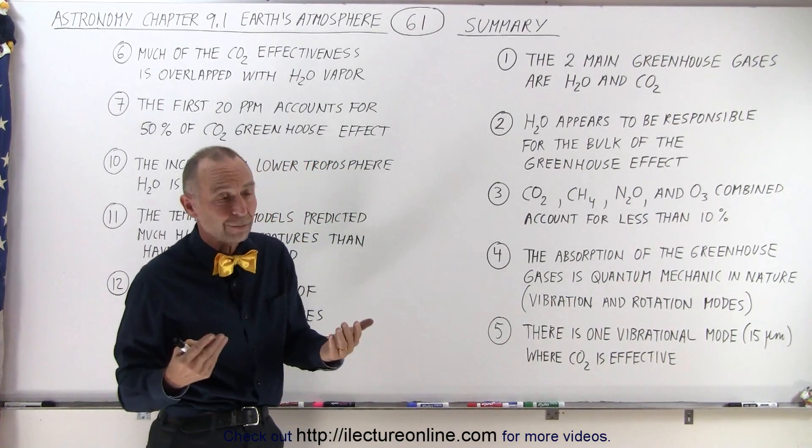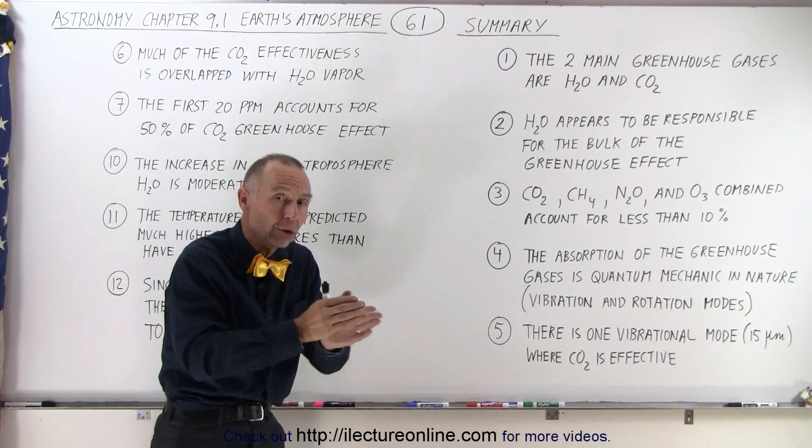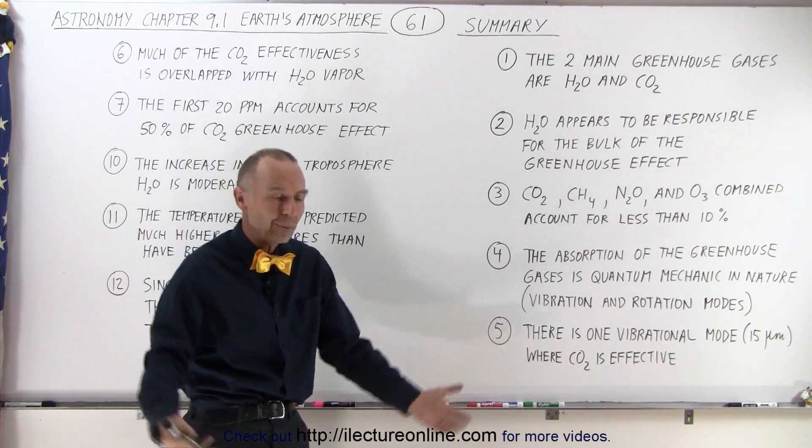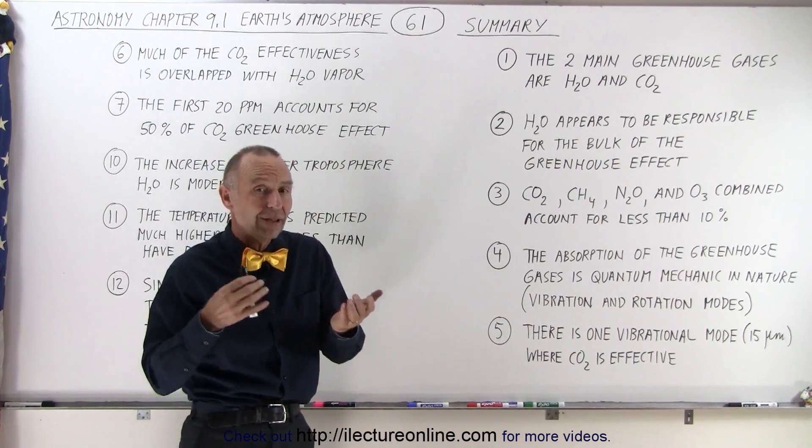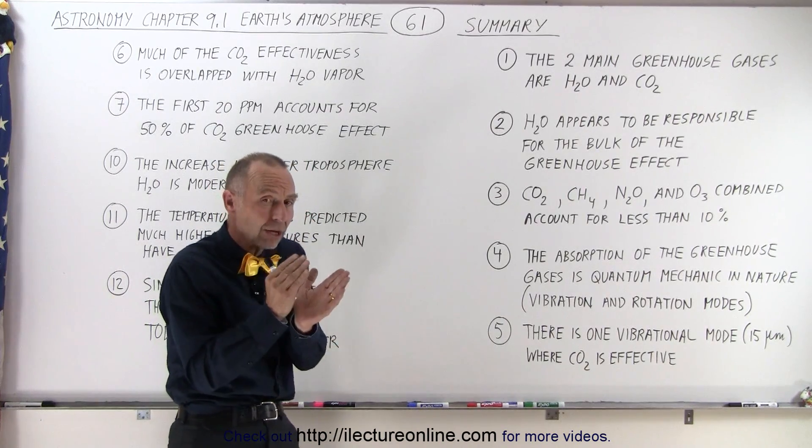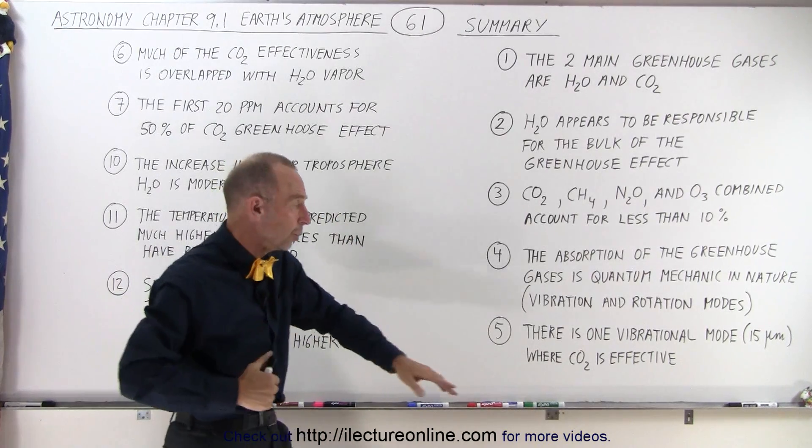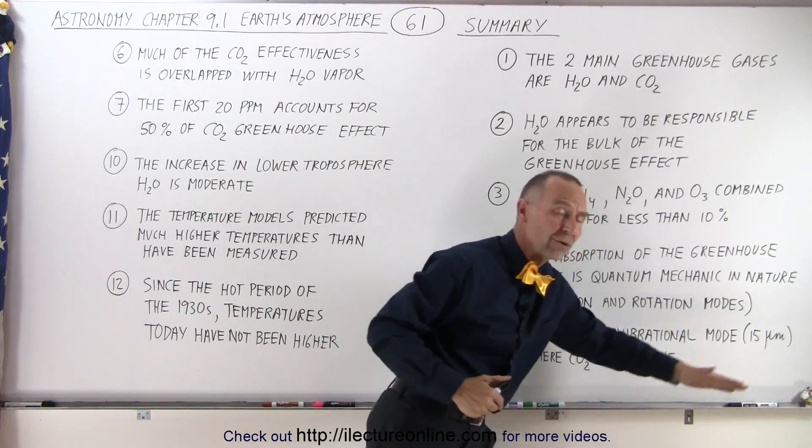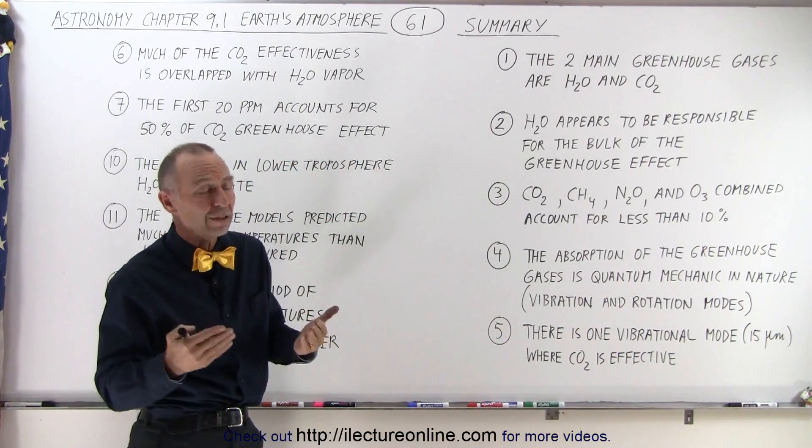Water vapor is extremely effective because they have so many rotational and vibrational modes that they can absorb a large percentage of the radiation coming back from the Earth. Carbon dioxide isn't as effective because carbon dioxide only has one main vibrational mode, the bending mode, which centers around the 15 micrometer wavelength radiation, which is where carbon dioxide is the most effective.